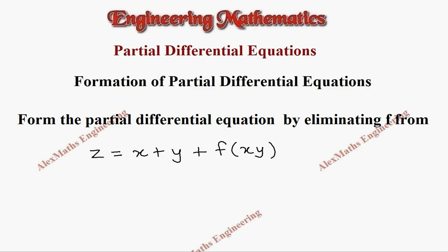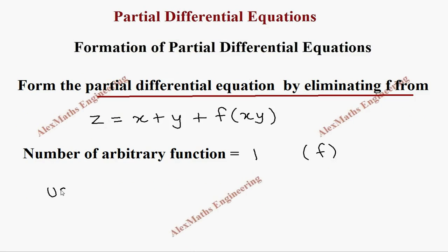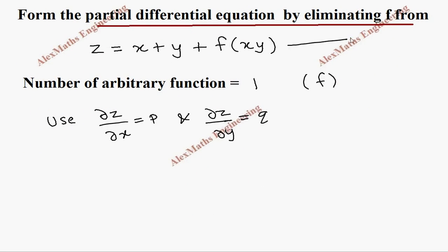Hi students, this is Alex. In this video we are going to form the partial differential equation by eliminating the given arbitrary function f. The number of arbitrary functions present is 1, that is the function f. We are going to use the first order partial derivatives: dou z by dou x, named as P, and dou z by dou y, named as Q, to eliminate the arbitrary function. Let's take this as the first expression.